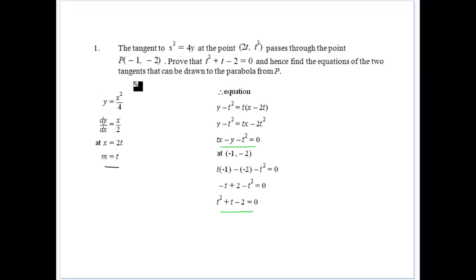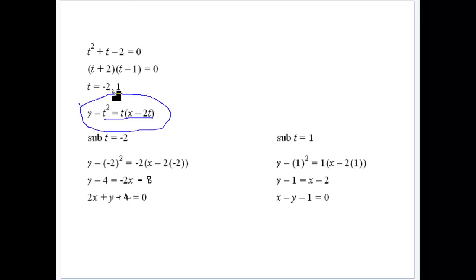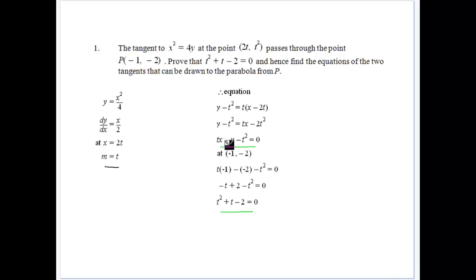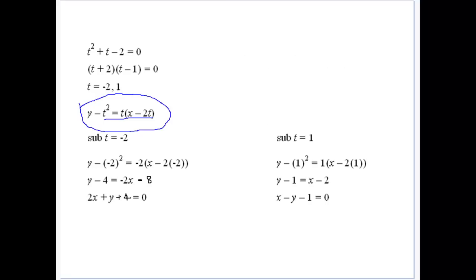Now, we know that we need to get those two values, and because we can substitute the values back in for t into that equation. Remember, that's given to us by the equation of the tangent there, at that point, that goes through that point. So when we've got that, we can substitute that.